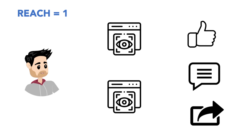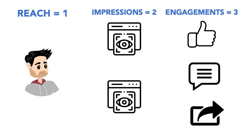The breakdown would go like this: the reach is one — you reached one unique person. The impressions is two — I saw the post twice. And your engagements are three — I engaged with the post in three different ways, three different times.